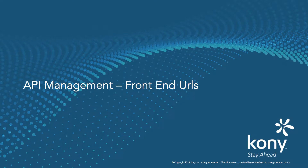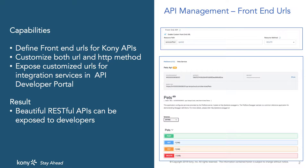With Kony App Platform, you can define your fabric services as APIs. With version 8 and service pack 3 of Kony App Platform, you can define front-end URLs for your Kony APIs. Front-end URLs can be customized both at URL and HTTP method level. The front-end URLs thus defined can be exposed to end users through developer portal, enabling you to expose beautiful REST APIs for your customers.